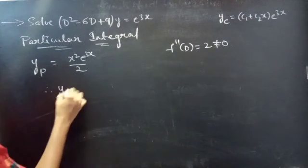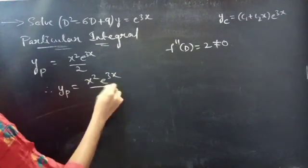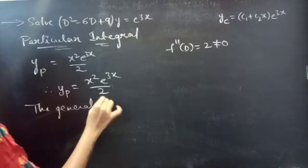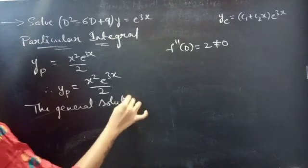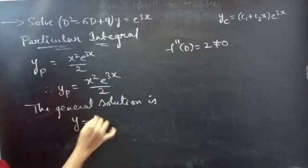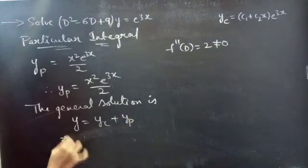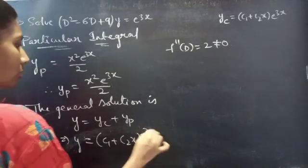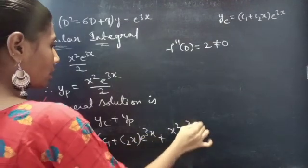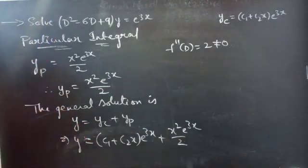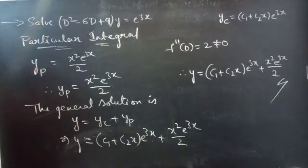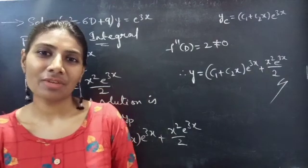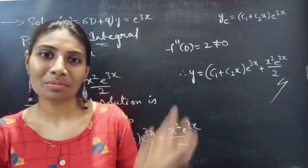Therefore, yp = x²·e^(3x) / 2. Now we can write the general solution: y = yc + yp, which gives y = (c₁ + c₂x)·e^(3x) + x²·e^(3x)/2, which is the required solution. We have seen a problem from higher order linear differential equations in this video. Hope you understand. We will see you in the next video. Until then, bye-bye.